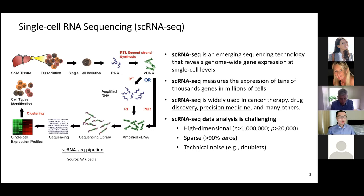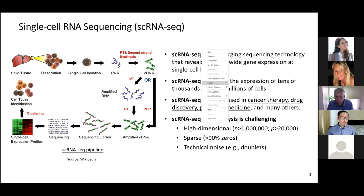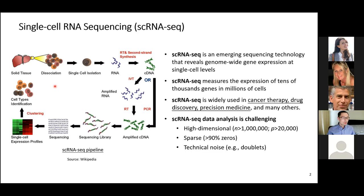First, let me give some introduction on single-cell RNA sequencing. scRNA-seq is an emerging sequencing technology that reveals genome-wide gene expression at the single-cell level. It can measure expression of up to tens of thousands of genes in millions of cells. These figures illustrate a general scRNA-seq experimental pipeline — we start from solid tissue, dissociate it into single cells, and isolate them to capture them into single reaction volumes.